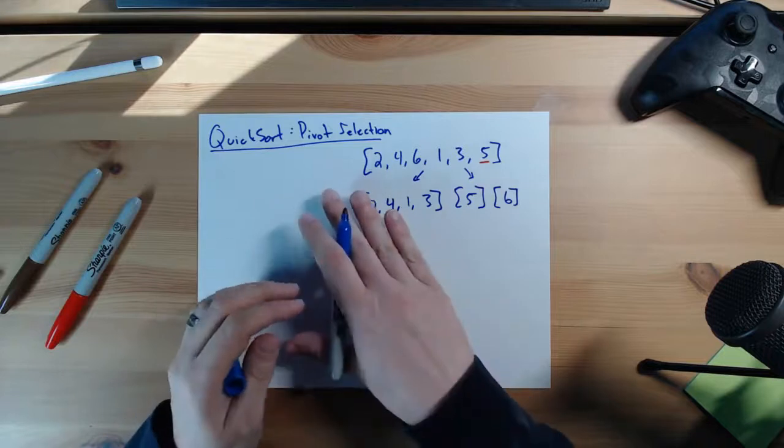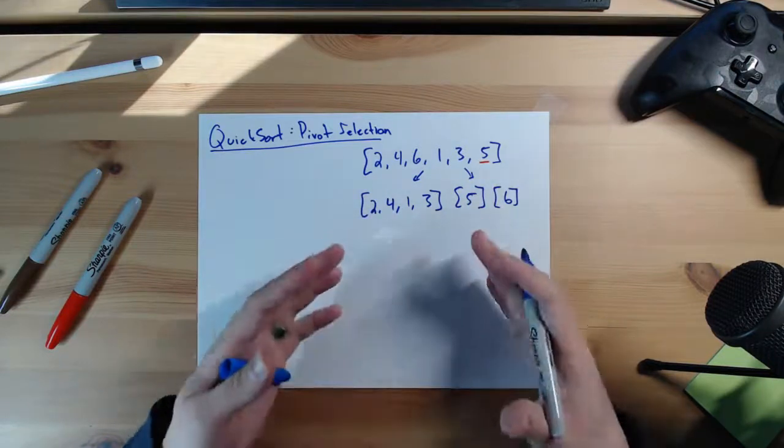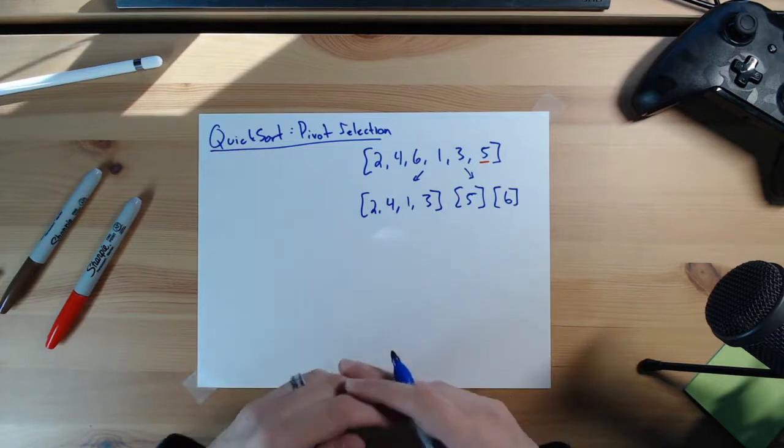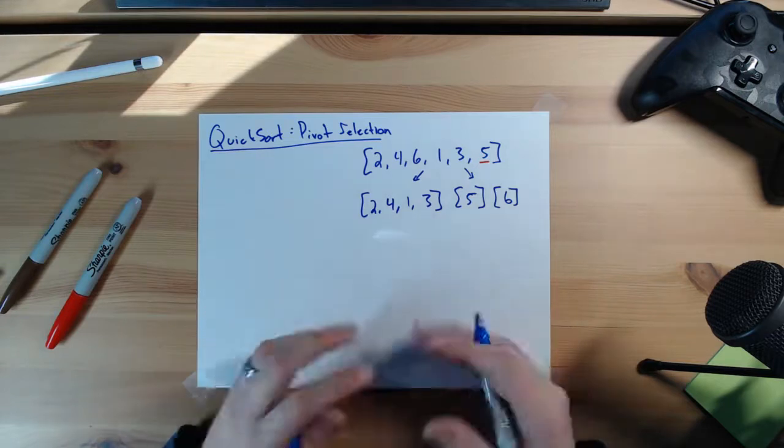Granted we don't want to search this entire thing just to find out what the middle number is. That will make the run time for this algorithm much longer. So we don't want to go about doing that.